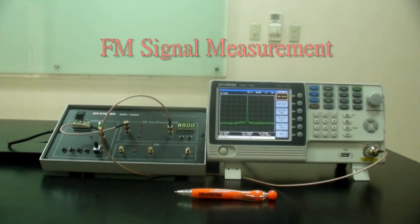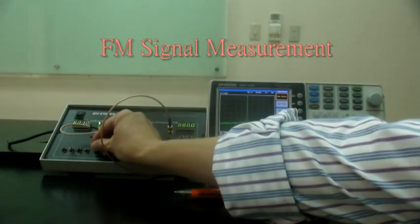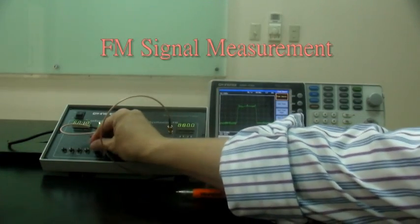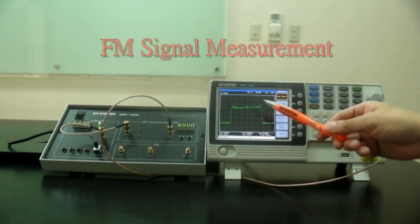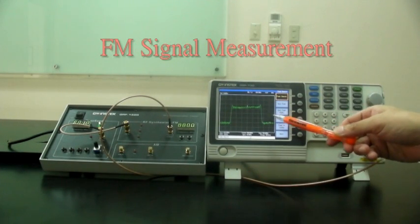And then turn the amplitude knob gradually clockwise to the maximum position. Now you see the FM index increased.